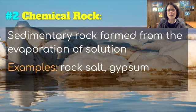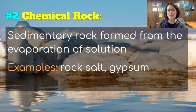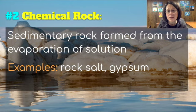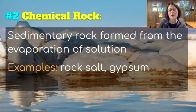The second type of sedimentary rock is chemical rock: sedimentary rock formed from the evaporation of a solution. Common examples are rock salt and gypsum. We've seen examples of both in class. In the background you can see evaporation occurring — perhaps at the Salt Lake or the Dead Sea — where you can see the salt evaporating out of the water.